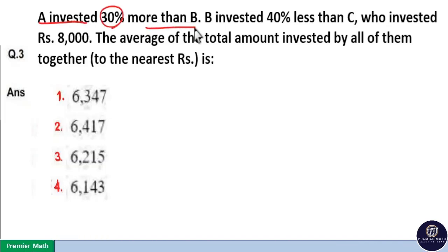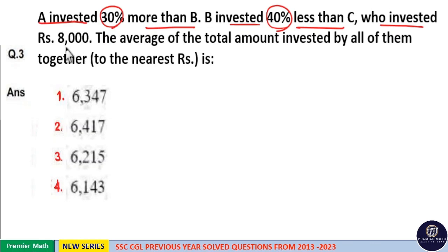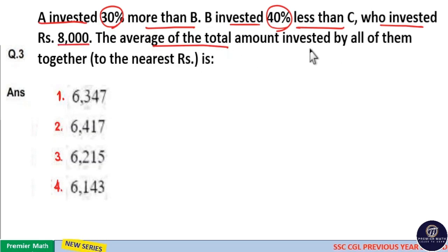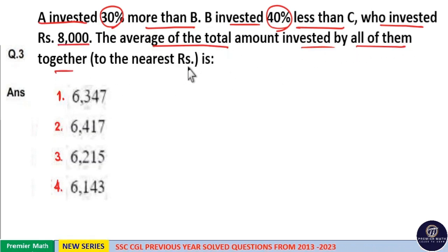A invested 30% more than B. B invested 40% less than C, who invested Rs. 8,000. The average of total amount invested by all of them together is: